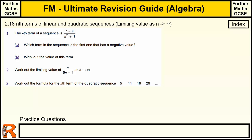Okay, this is the last video in the algebra section of my Ultimate Revision Guide to Further Maths GCSE. This is section 2.16, nth terms of linear and quadratic sequences. And what happens when n approaches infinity for one of these sequences? What's the limiting value? Where does it go to?